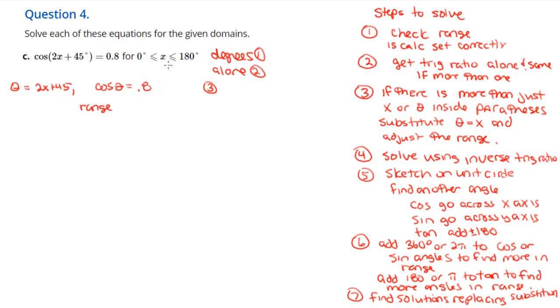The range has to be adjusted, so we're gonna do whatever it says to the numbers in the range. Our new range is 0 plus 45, which is 45, and 2 times 180 plus 45 is 405. So now we got cosine theta = 0.8. We do the inverse cosine of 0.8 and find the angle, which should be 36.9 degrees.